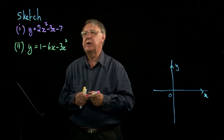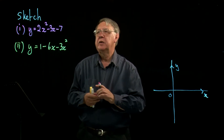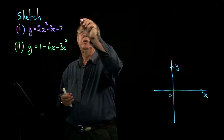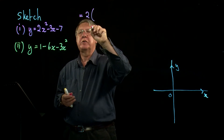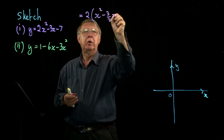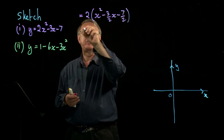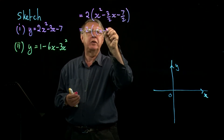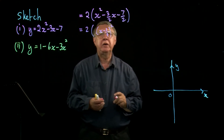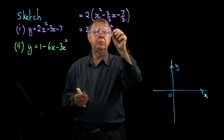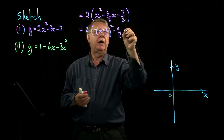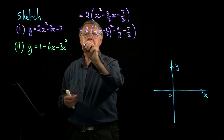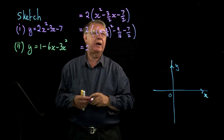We use the general method for completing the square. We take out the 2 — in other words, we divide by 2. The method then tells me to halve the number of x's. So if I halve 3 over 2, I get 3 over 4. It then tells me to square 3 over 4 and take it away, so that's 9 over 16, and the 7 over 2 is there as well.